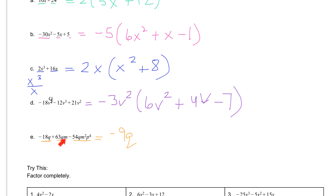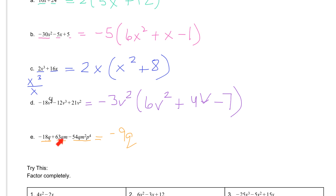If you look at the m's though, the second term and the third term both have m's, but the first term does not, so there's no m to take out of it — which means we can't factor it out. Same thing goes for the p: the last term has a p to the fourth, but the other two terms do not have any p's to take out, so we cannot take out any p's.